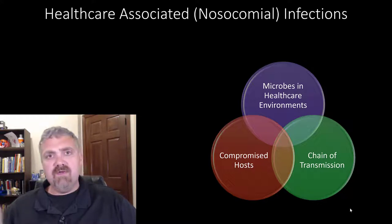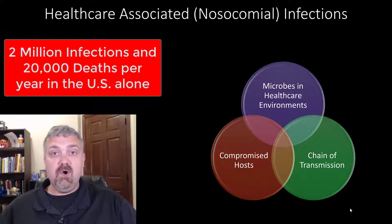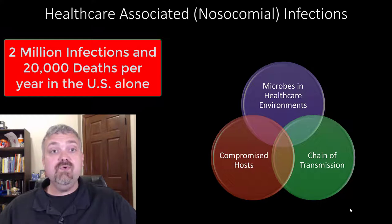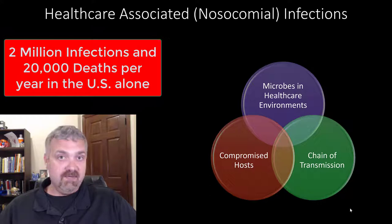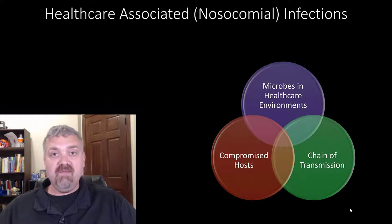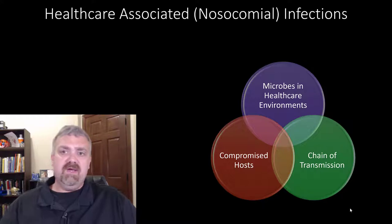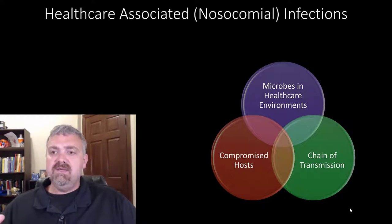So why do they matter? Even though we have infection control committees and do our best — sterile fields, proper precautions, hand washing — there are still 2 million nosocomial infections per year, leading to 20,000 or more deaths per year. At this point, nosocomial infections are the 8th leading cause of death. I made a Venn diagram to describe why these microbes are so dangerous.